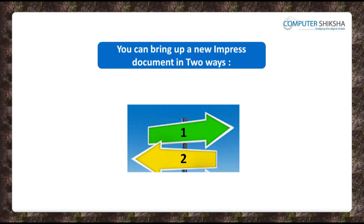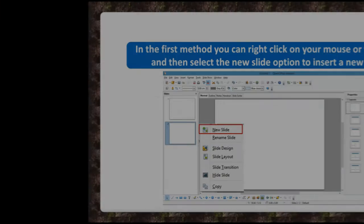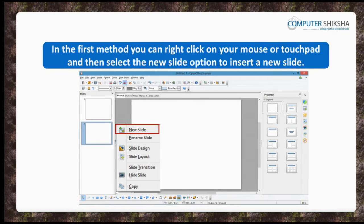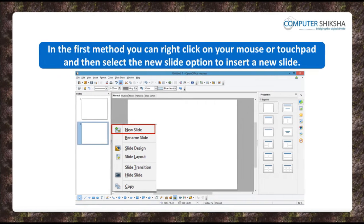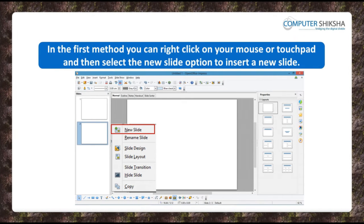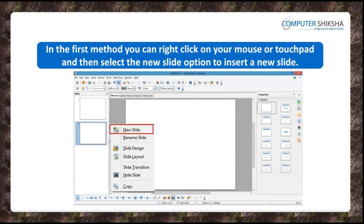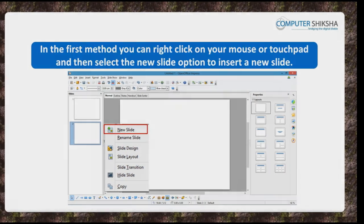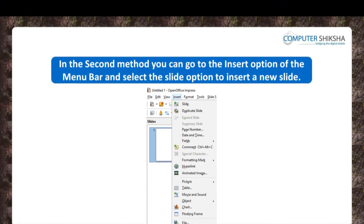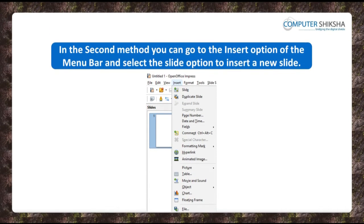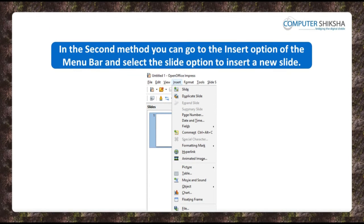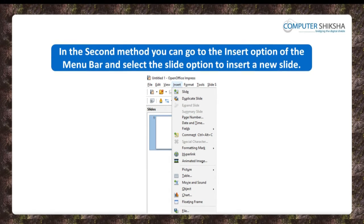You can insert a new slide in two ways. In the first method, you need to right-click with your mouse or touchpad in the Slide pane and select the New Slide option there — your new slide will get inserted. In the second method, you need to click on the Insert menu and select the New Slide option to get a new slide inserted.